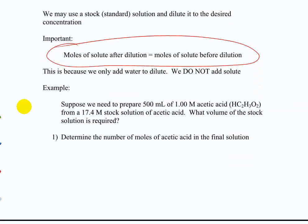You only add water to dilute — you do not add solute. Here's the type of problem you might run into: you need to prepare 500 milliliters of a 1 molar acetic acid solution from a 17.4 molar stock solution. What volume of stock solution is required? This is a common task — as future chemists, you'll often take a concentrated stock solution and dilute it to the concentration you actually need.